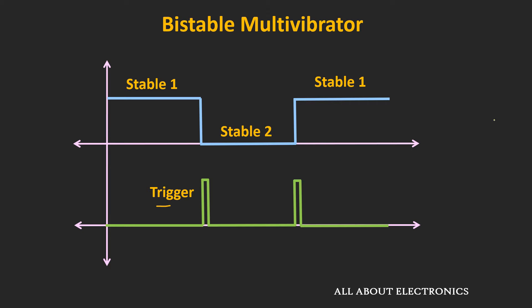This type of bistable multivibrator can be used as a flip-flop. Now let's understand how it can be designed using the BJT.